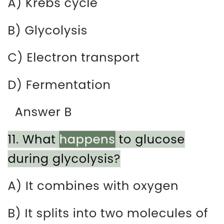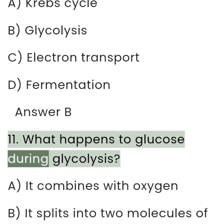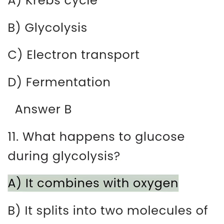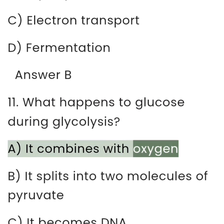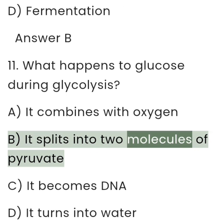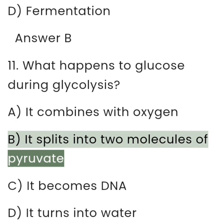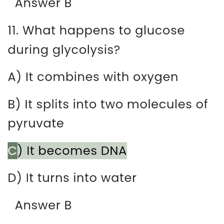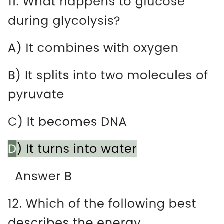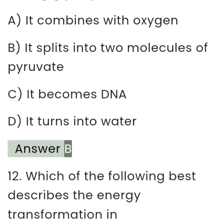11. What happens to glucose during glycolysis? A. It combines with oxygen. B. It splits into two molecules of pyruvate. C. It becomes DNA. D. It turns into water. Answer: B.